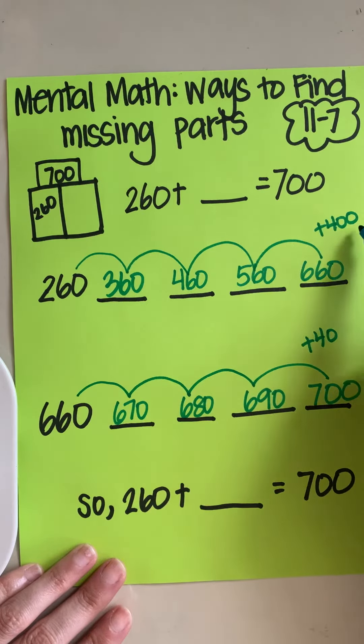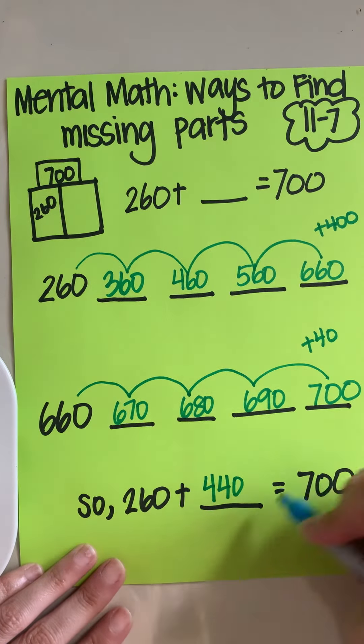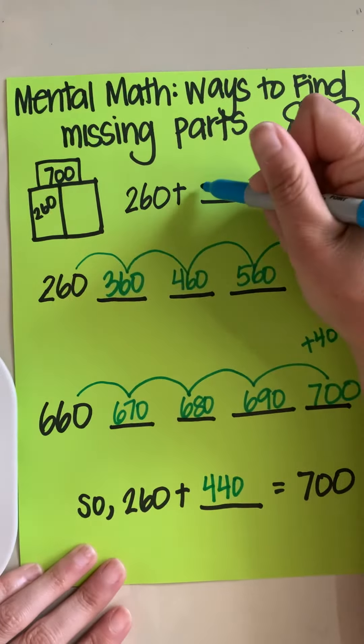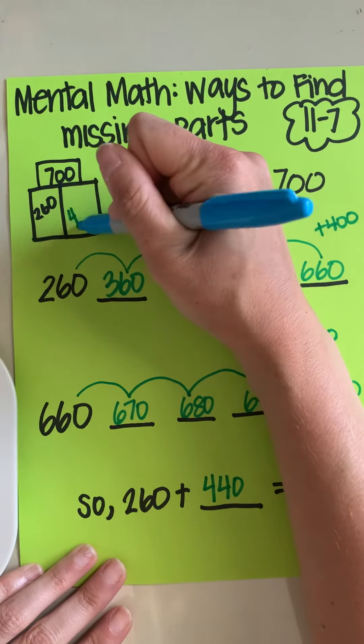I can easily tell that 400 plus 40 is 440. So my missing part is going to be 440, 260 plus 440 equals 700. And then I'm going to fill in my missing part over here.